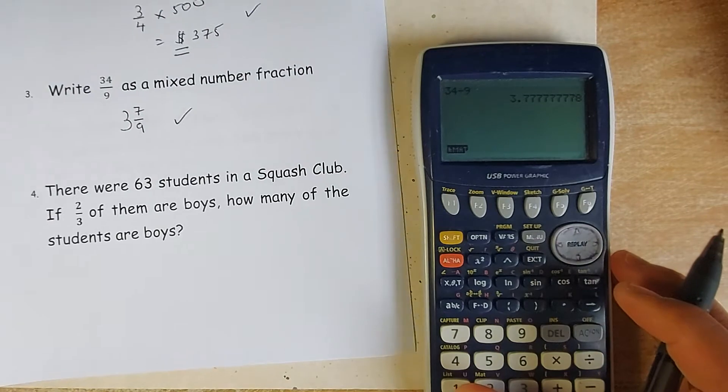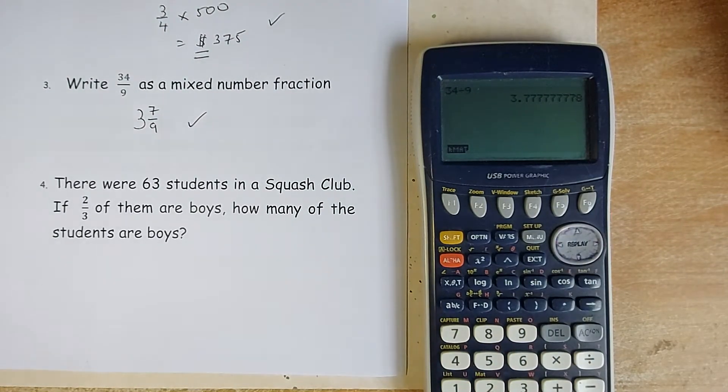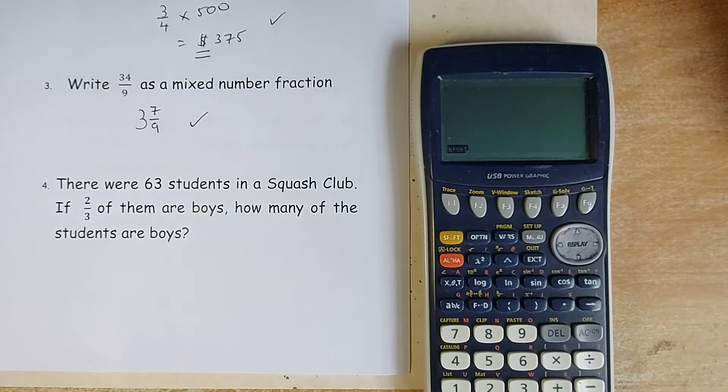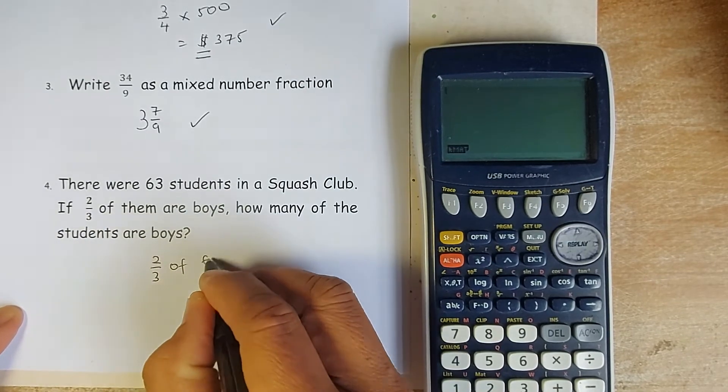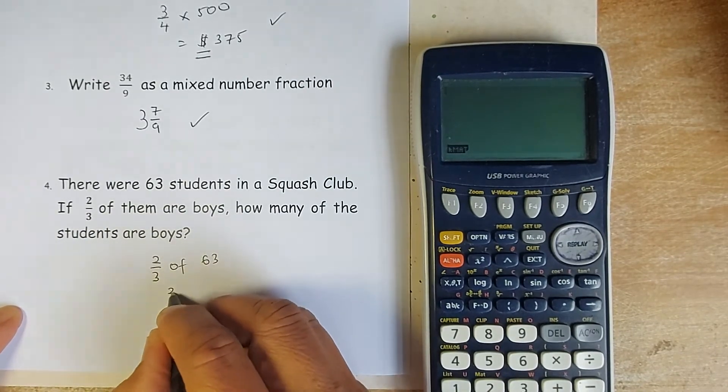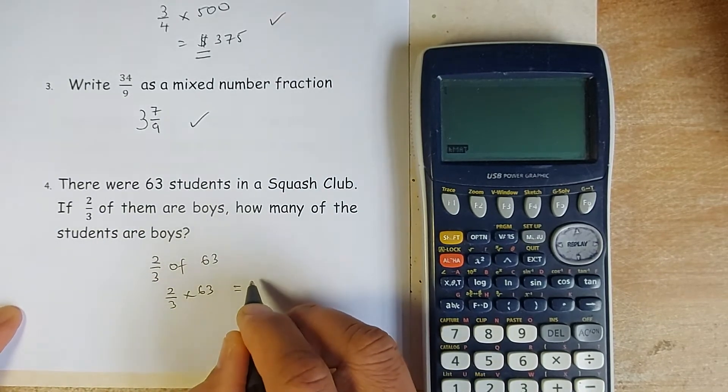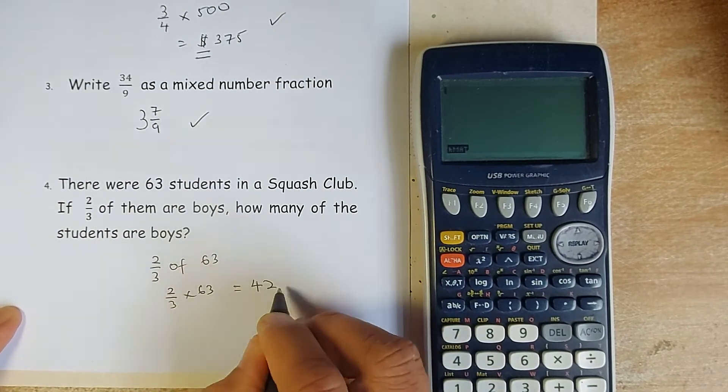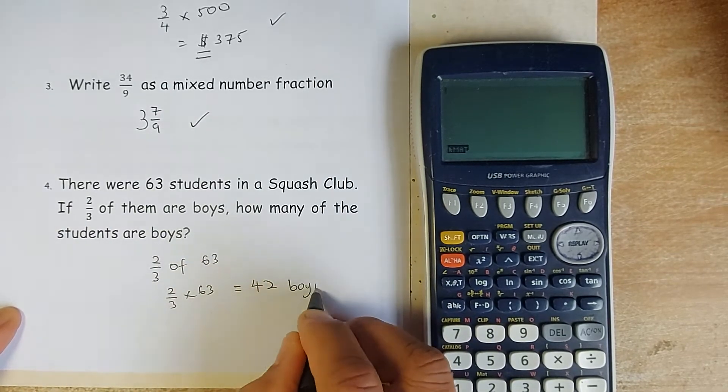Now we do the last question in this page. There were 63 students at squash club. If 2 thirds of them are boys, how many students are boys? So 2 thirds of them are boys, so it will be 2 thirds of 63. As I mentioned earlier, 'of' means you multiply. 2 thirds times 63, put in your calculator and the answer is going to be 42. Make sure because they ask you how many boys, you must answer 42 boys.